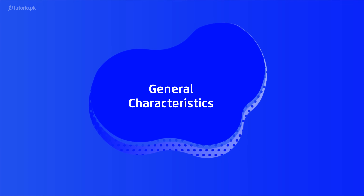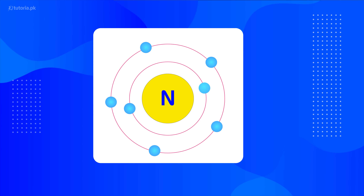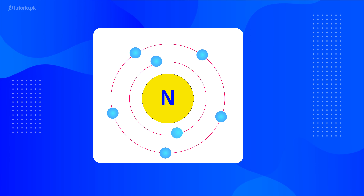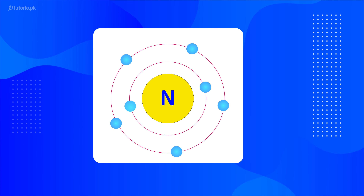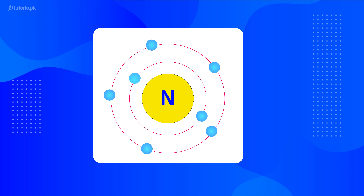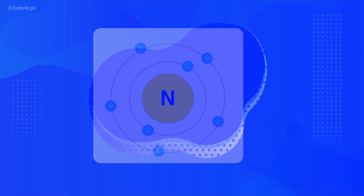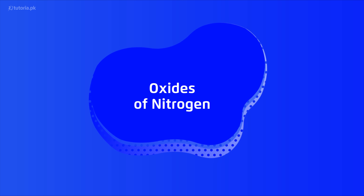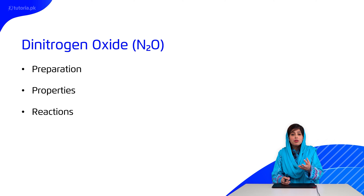General characteristics: Group 5A elements have five electrons in the outermost shell. They can lose five electrons to achieve an octet, or lose three electrons giving plus three or plus five oxidation states. Allotropic forms exist extensively, especially in the case of phosphorus. Nitrogen makes up 78% of atmospheric air.